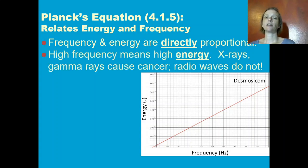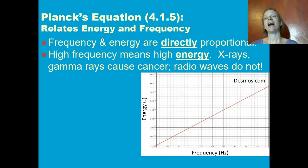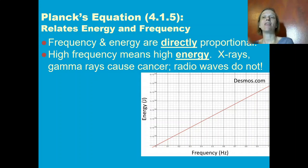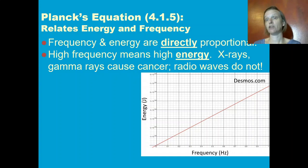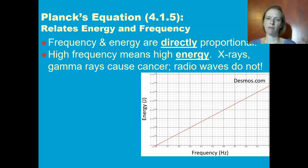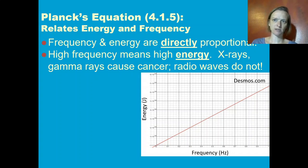X-rays and gamma rays are high-frequency wavelengths of electromagnetic radiation. Because they're high-frequency, they are high-energy. And that's why those are the wavelengths of electromagnetic radiation that cause cancer — because of that high energy that can damage DNA. Radio waves and microwaves are lower-energy and do not damage cells.